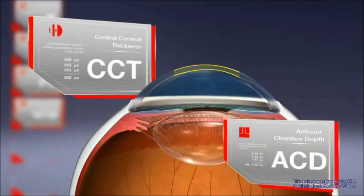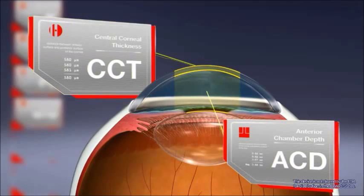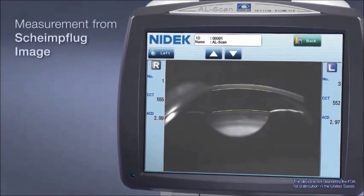With Scheimpflug imaging of the anterior eye, accurate measurements of central corneal thickness and anterior chamber depth can be obtained, and those measurements can be verified on screen.